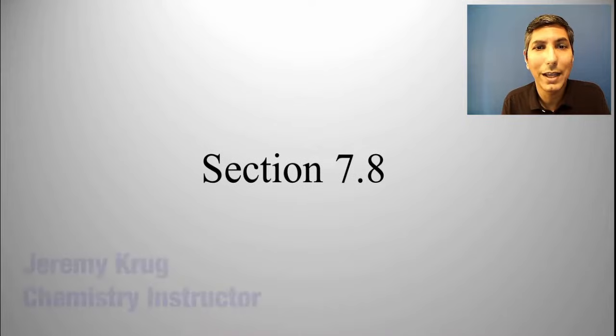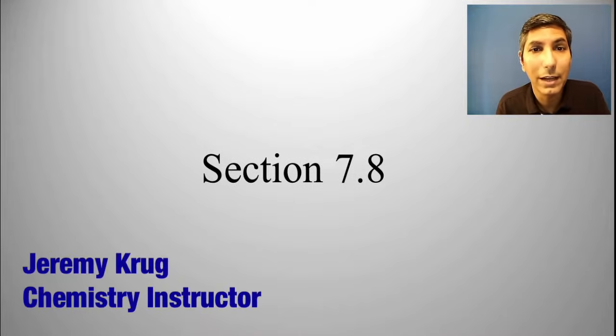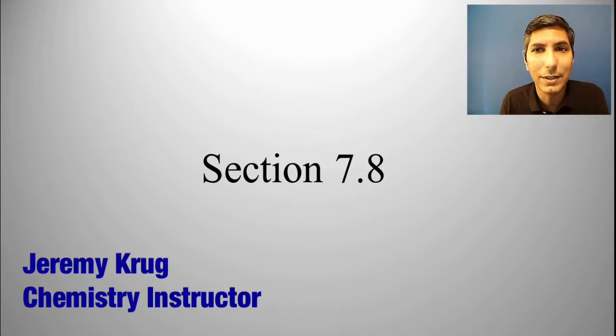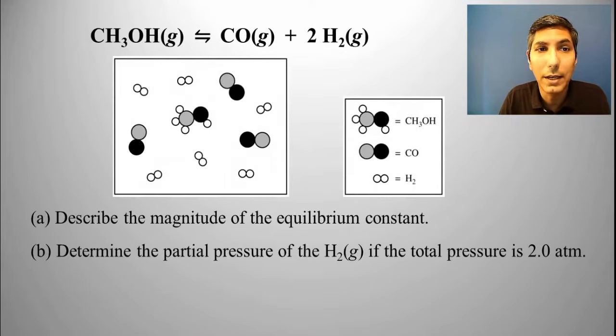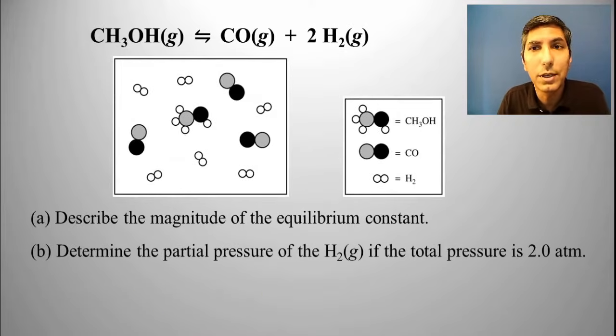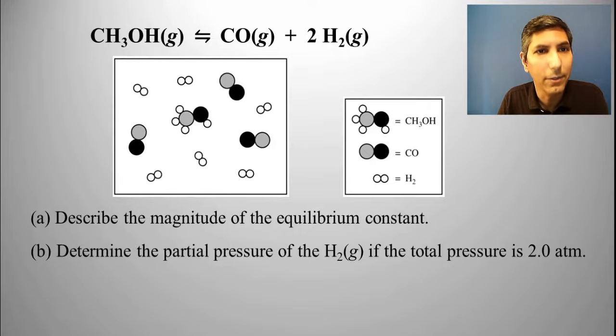Hi there, I'm Jeremy Krug, and in this video we're taking a look at AP Chemistry Unit 7, Section 8, which is about how we can represent an equilibrium mixture using a picture type of method, like we see here.